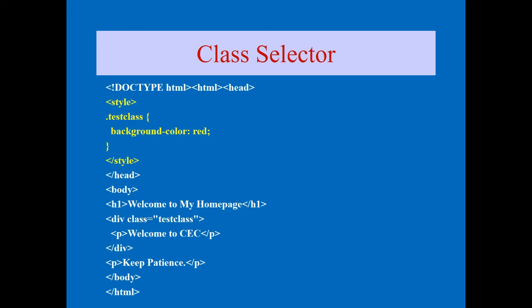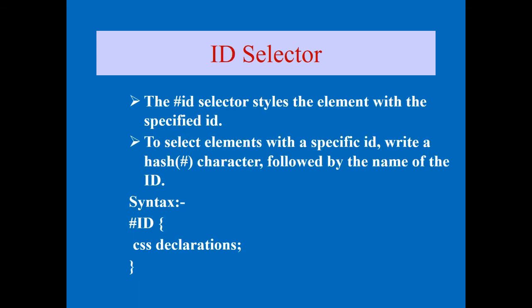Now coming to ID selectors. The main difference between class and ID selectors is: a class selector can be called any number of times in a page, but an ID selector can be called only once in a single page — the same ID cannot be used multiple times on the same page. Another difference is the syntax: class uses a dot symbol, while ID uses a hash (#).